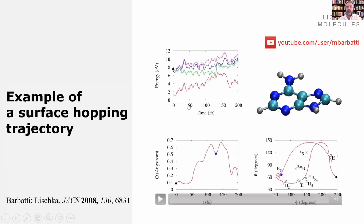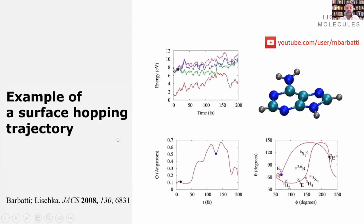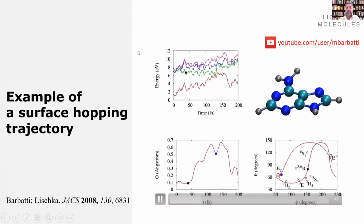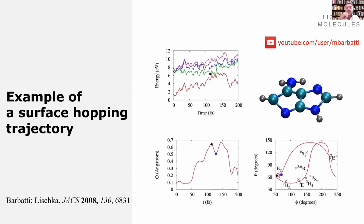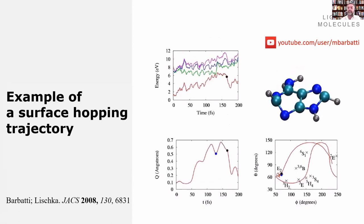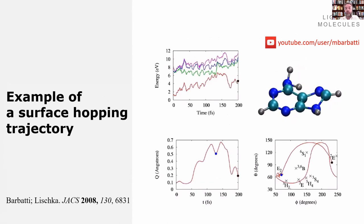For example, I can quickly show here one trajectory for surface hopping where you see adenine. Look at this graph at the top: adenine is in the first excited state, the green state. As soon as it gets close to an intersection, it goes to the red state, the ground state, thanks to the surface hopping algorithm. Of course, this trajectory alone doesn't tell much. You need hundreds of trajectories to accumulate statistics and tell something about the system.